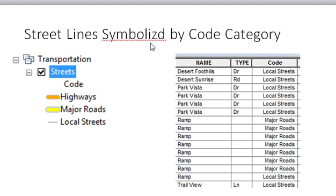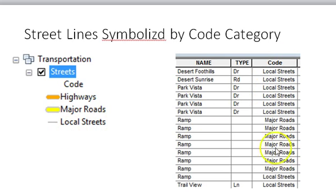When you open the geodatabase for this project, you'll see that the streets are symbolized by code category: highways, major streets, and local streets. The street code is in there, but we're going to work with the streets uncoded — that's just a symbolization on your map when you open it.